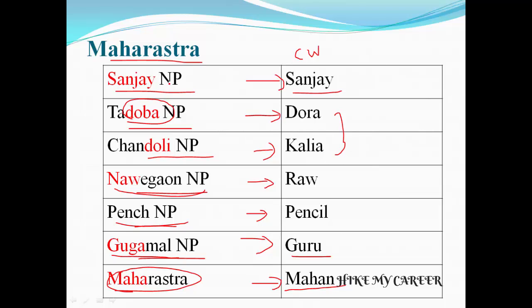So Sanjay National Park code word is Sanjay. Tadaba National Park code word is Dora. Chandoli National Park code word is Kaliya — Doli rhymes with Kali. Navgwan National Park code word is Ra. Pench National Park code word is Pencil. Gugamal National Park code word is Guru.